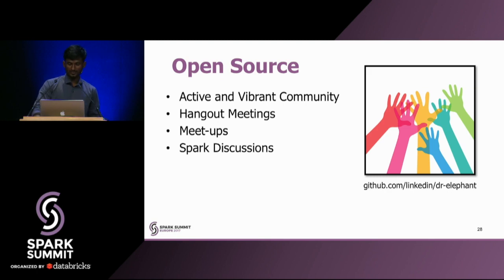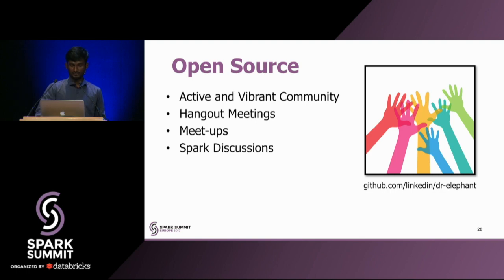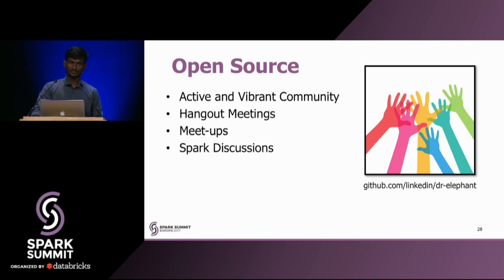Dr. Elephant is an open source project. It was open sourced in mid-2016. This is an active and vibrant community — we have regular Hangout meetings, and if you have anything to discuss, you can add your topics to an agenda document and let us know through a GitHub issue. We frequently have meetups and have been having a lot of discussions around Spark improvements.